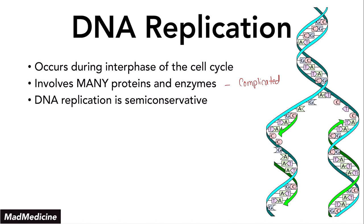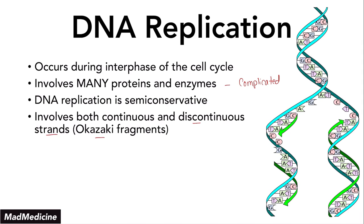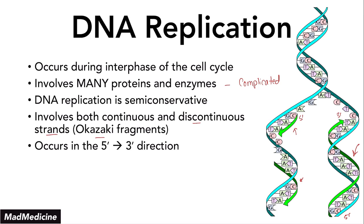DNA replication is semi-conservative and it involves both the continuous and discontinuous strands called the Okazaki fragments. These fragments are not continuous like the leading strand. Replication is always occurring in the 5 prime to 3 prime direction. On the lagging strand, the original template is read 3 prime to 5 prime, but the new daughter strand is always synthesized 5 prime to 3 prime.